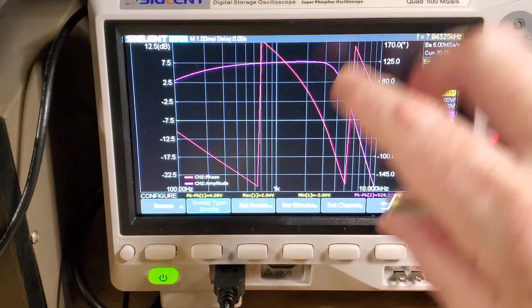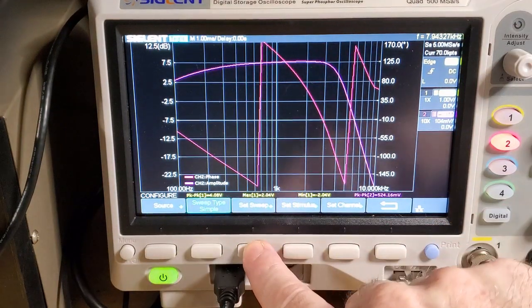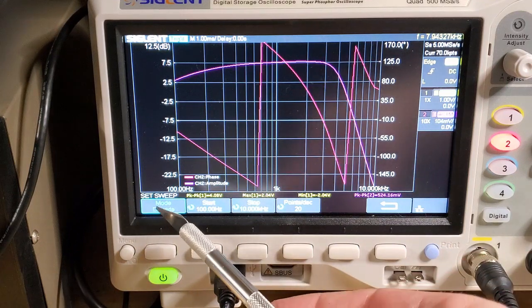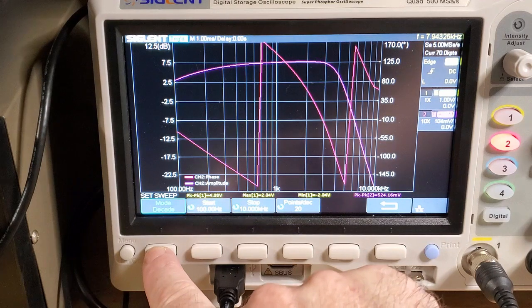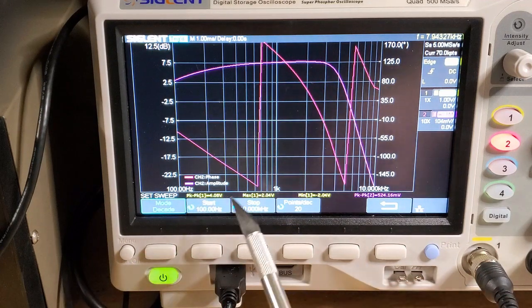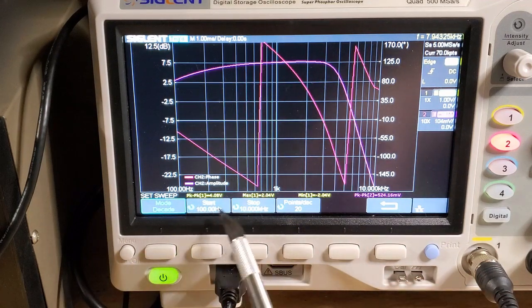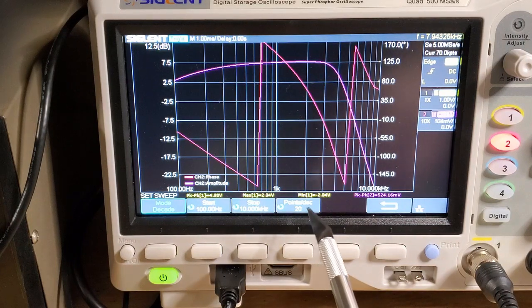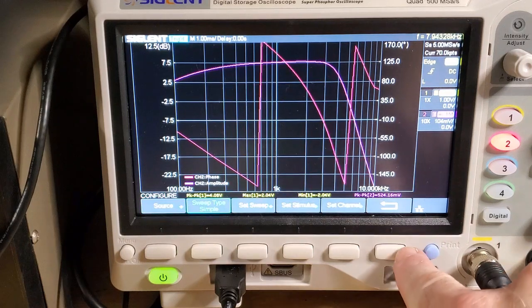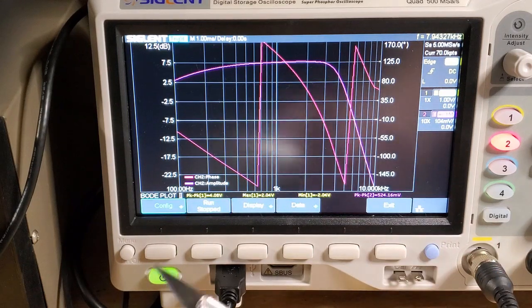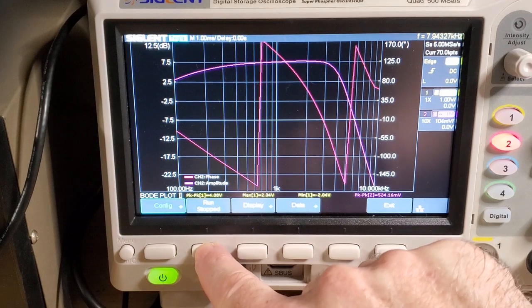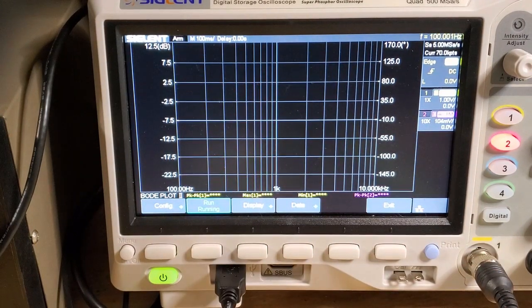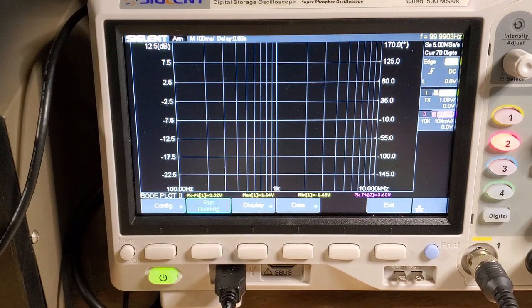The other thing you want to go into is the Sweep menu itself. This is where you set up what mode, decade mode or linear, and then the Start and Stop Frequencies, and then finally the number of points you want to plot per decade. When you finish doing that, you go back to the original menu and you just click on the Run menu and it'll go off and start doing its stuff.